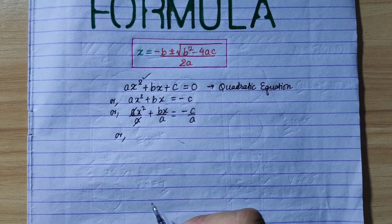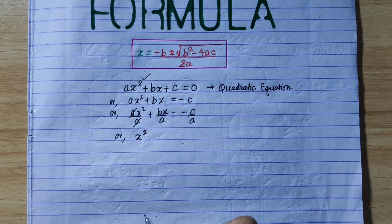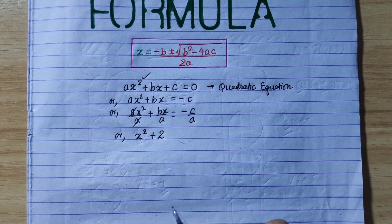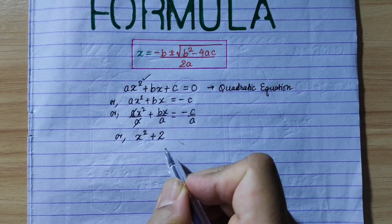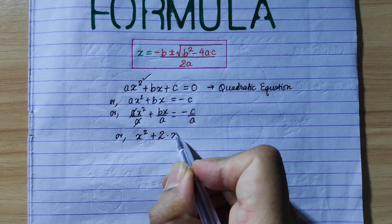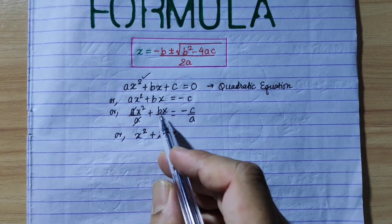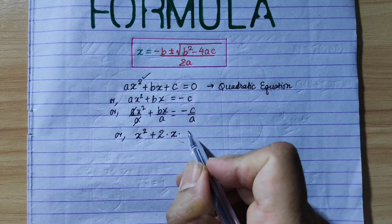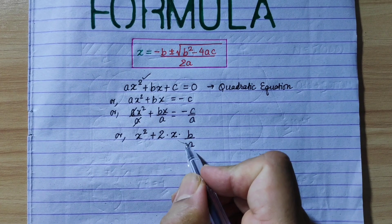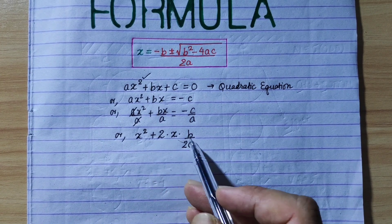Now we will continue. Now we have to do completing the square. So we have to do a square with x squared. Now we have to write the square. This is the completing the square step, where we use the identity a² plus 2ab plus b².